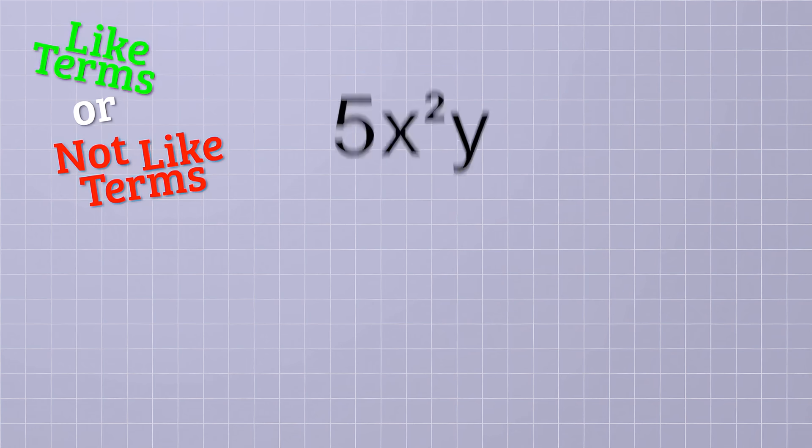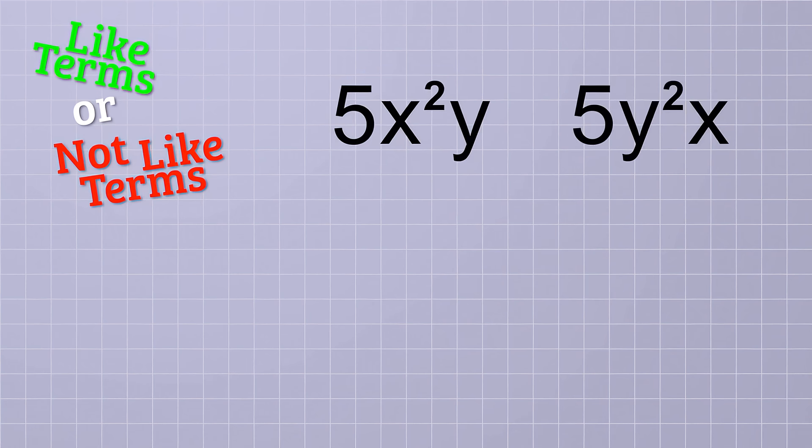Last, we have 5x squared y and 5y squared x. Now be careful with this one. You might think that it's like the last one where the terms are just in a different order. But look closely. In the first term, the x is being squared. But in the second term, the y is being squared. That means even if we switch the order, the exponents move with the variables, so the variable parts are not the same. Which means these are NOT like terms.